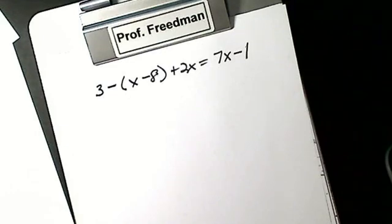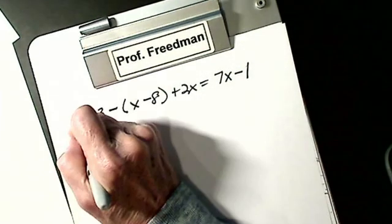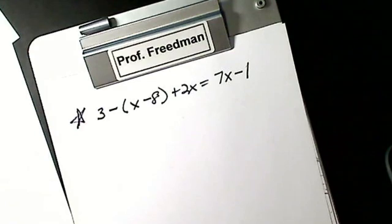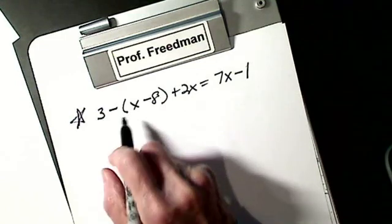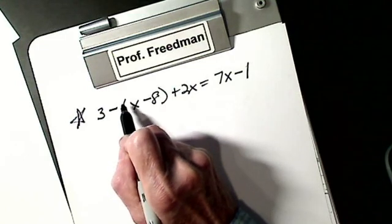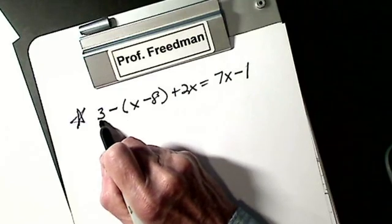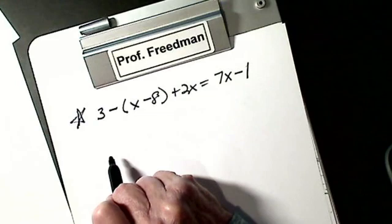I just want to do two more equations because these are the ones that people get wrong all the time. A common mistake on this one: there are those people that want to distribute the 3. If the 3 was right next to the parentheses, I would distribute the 3. But the 3 is way out here. That means what's right next to the parentheses is really a 1.